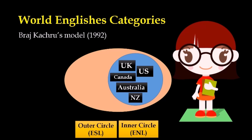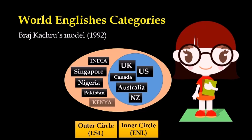The second circle, which is bigger than the inner circle, is the outer circle. It refers to countries which utilise English as an official language used in education, business, government, etc. English in the outer circle is also known as English as a second language or ESL. The ESL countries include, but are not limited to, India, Singapore, Nigeria, Pakistan and Kenya.